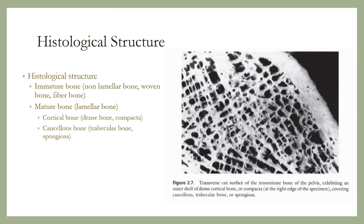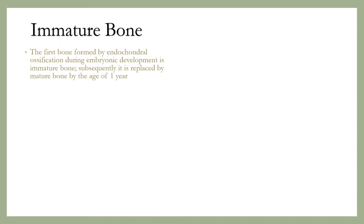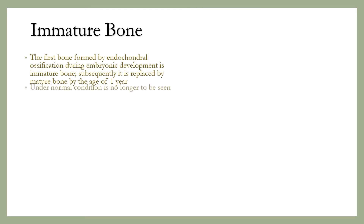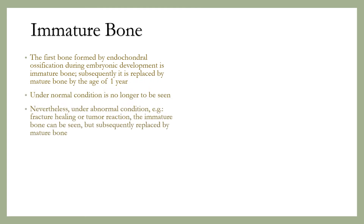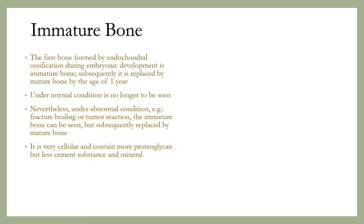Histological structure: from the viewpoint of its microscopic structure, bone is classified as immature and mature, consisting of cortical bone and cancellous bone. Under normal conditions, immature bone is no longer seen. Nevertheless, under abnormal conditions, for example fracture healing or tumor reaction, immature bone can be seen, but is subsequently replaced by mature bone. Immature bone is very cellular and contains more proteoglycan but less cement substance and mineral.